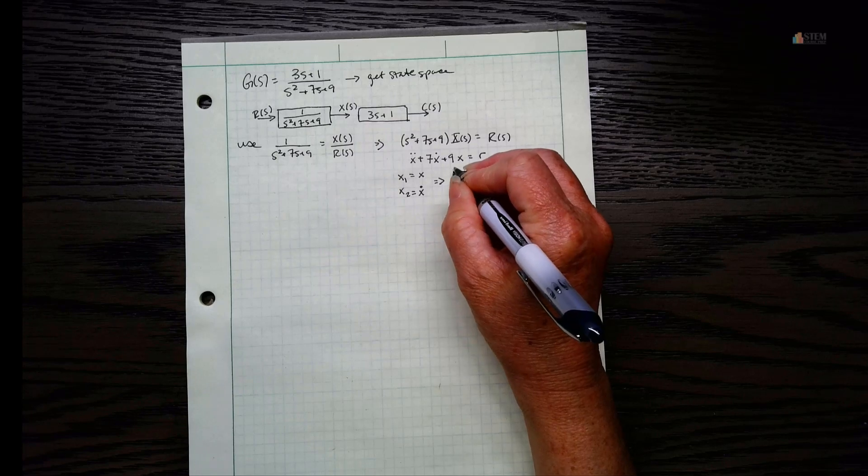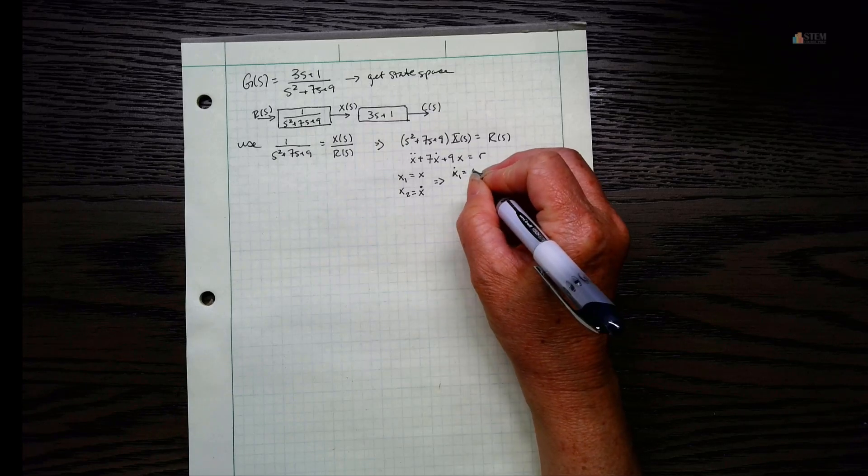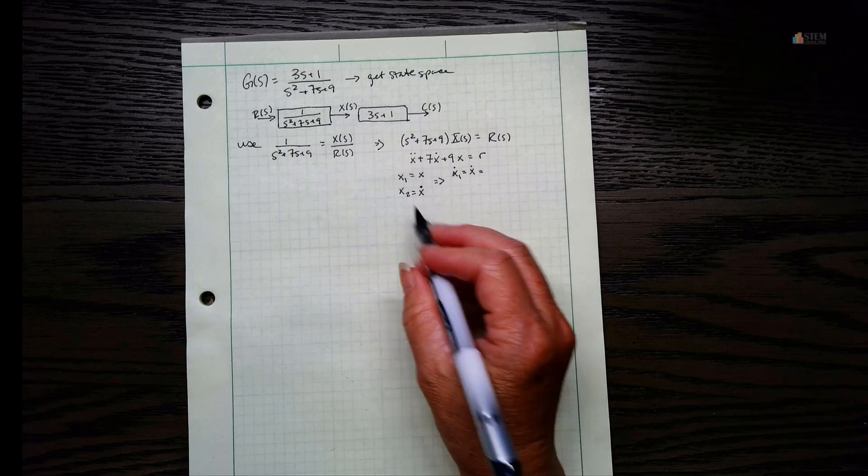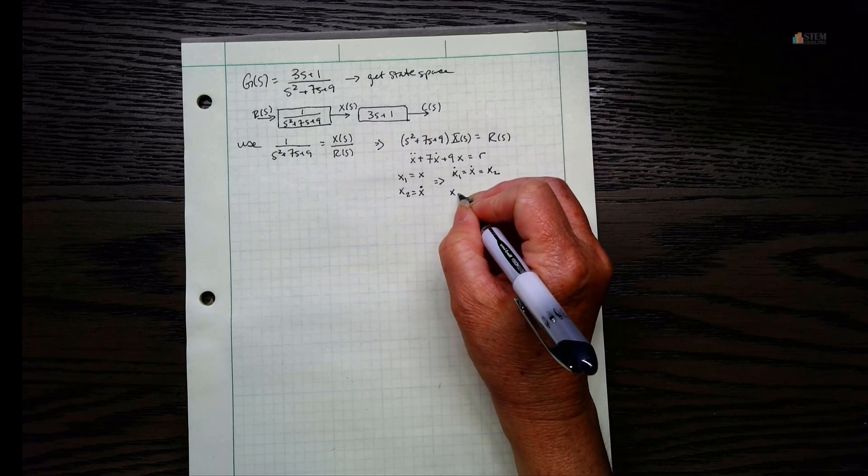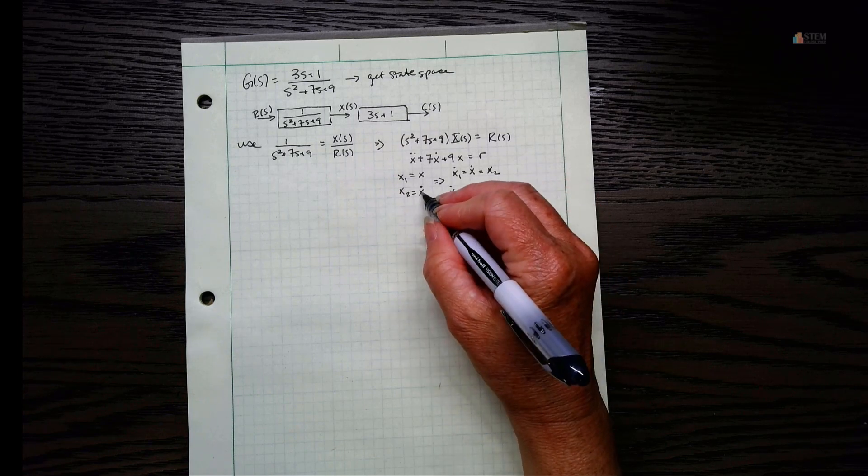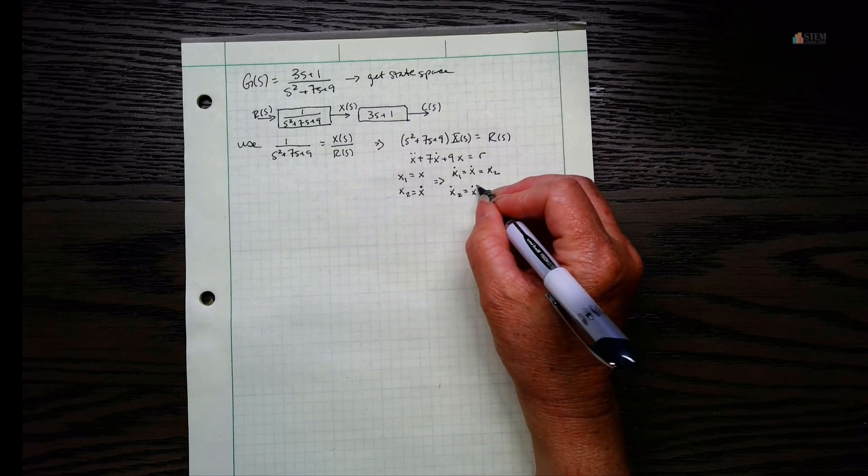We had a second order derivative here, so I'm going to go to the first order derivative right here. And the reason for that is because we got to take the derivative of these. So we need to take the derivative of these. If we do that, we do X1 dot equals X dot. Well, X dot is X2. And then here we got X2 dot equals X double dot, because we're taking the derivative of X dot.